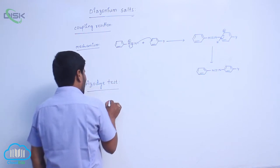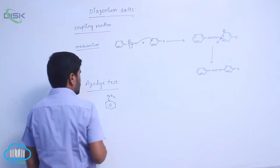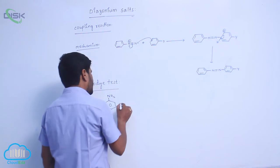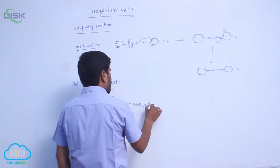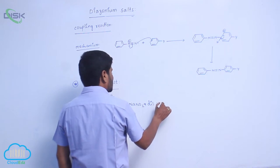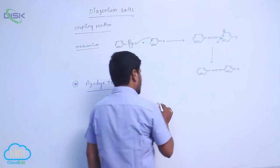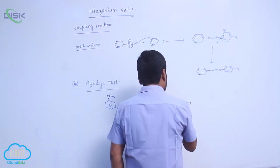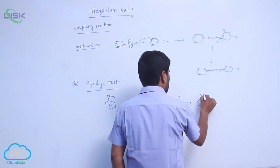When aniline reactivates, in one solution is aniline. The another mixture is sodium nitrite plus dilute hydrochloric acid. This is 0 to 5 degrees centigrade to form which one? Benzene diazonium chloride.